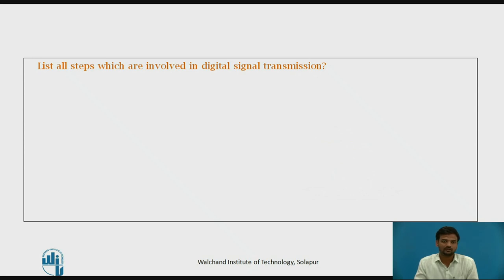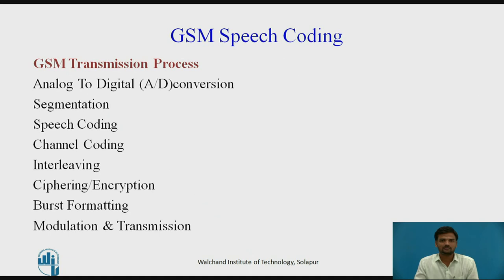GSM transmission process involves the following steps. First step is Analog to Digital Conversion. Then converted data is segmented and speech is coded. Next processes are Speech Coding, Channel Coding, Interleaving, Ciphering (i.e. Encryption Process), Burst Formation, and Modulation and Transmission.